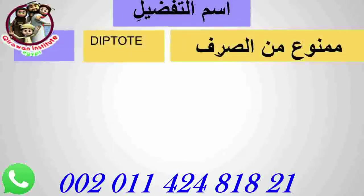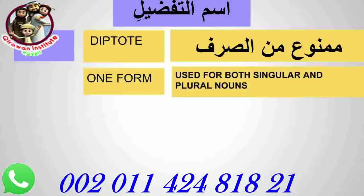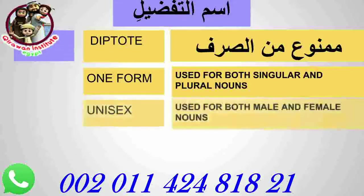Any noun with a single Dhamma and the pattern Af'alu - like Ahmaru, Asgaru - this pattern is Diptote. That means it doesn't take Kasra. So Ismu Tafdeel doesn't take Kasra. The second characteristic is one form - whether the noun it is describing is singular or plural, we use just Af'alu. The third is that it is unisex - used for both male and female nouns. There is no separate male or female version.